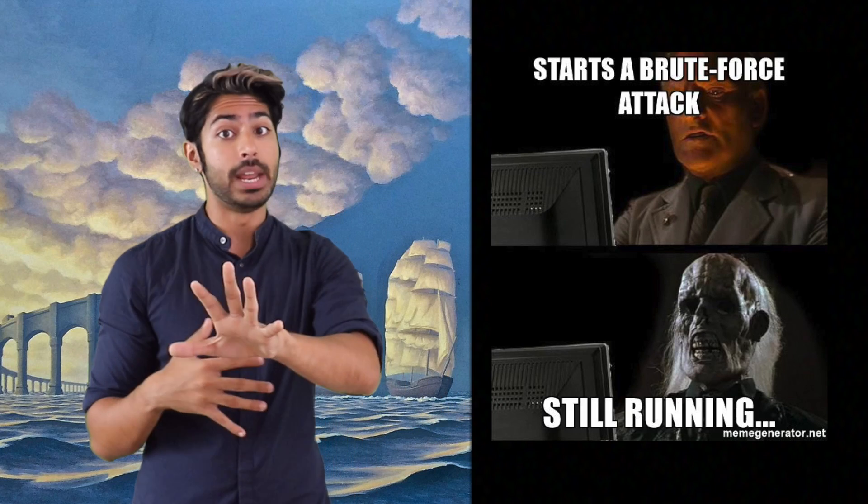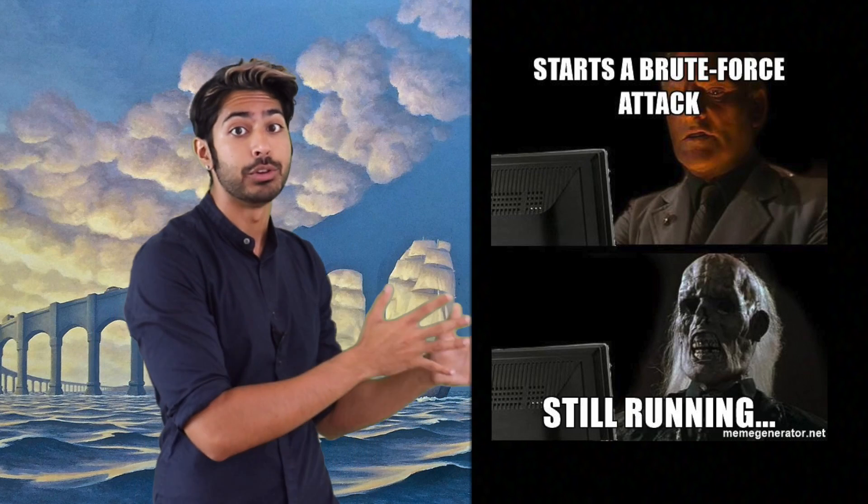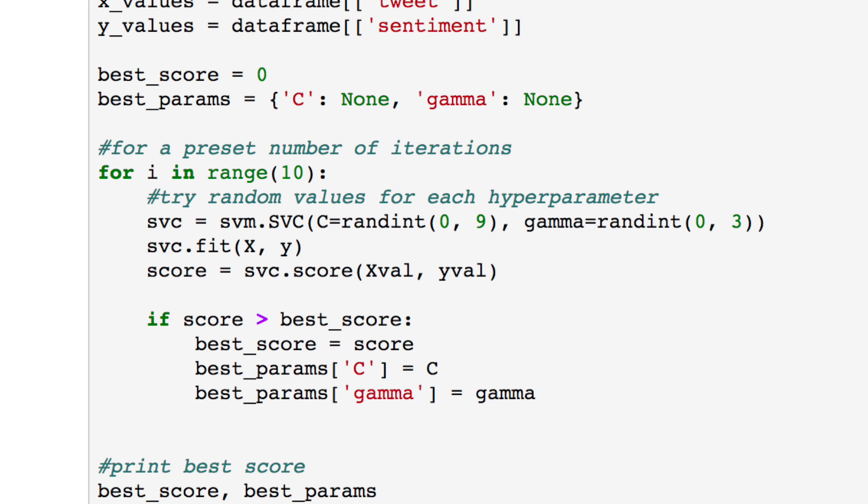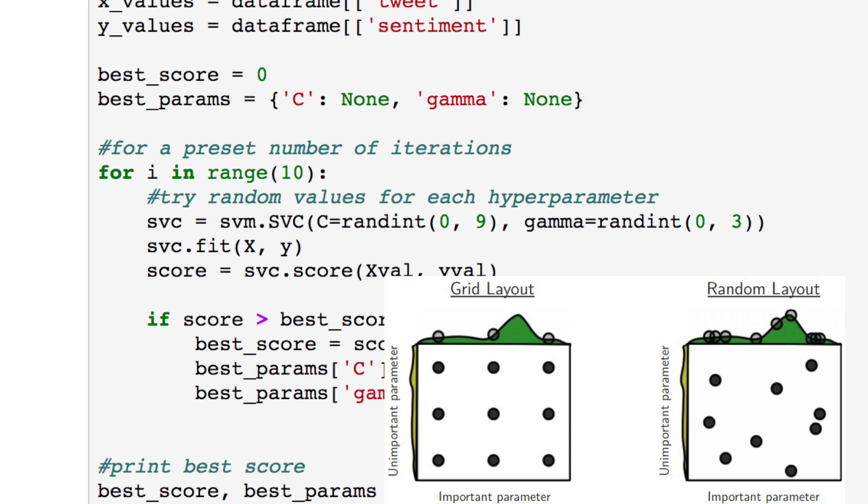I think we can do better than an exhaustive search. We've tried every combination of a preset list of values of our hyperparameters. But what if instead we tried random combinations of a range of values for a number of iterations we define? This won't guarantee that we'll get the best hyperparam combination like grid search did, but it will take a lot less time.